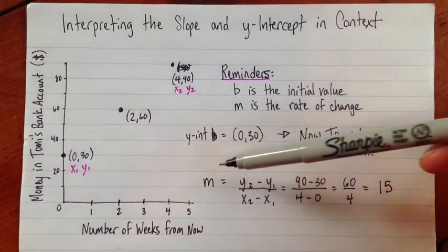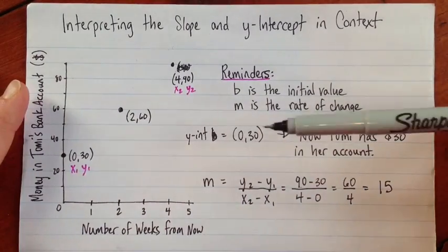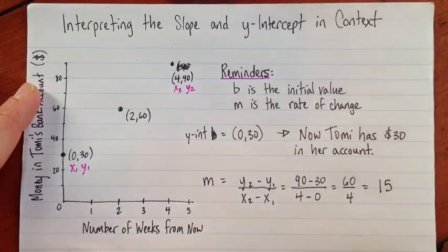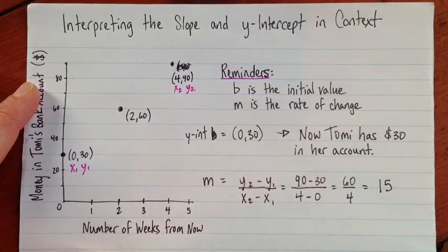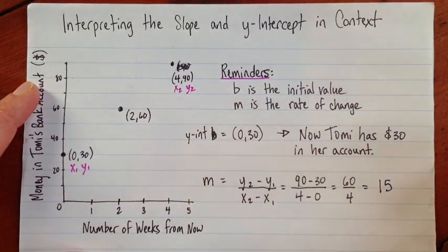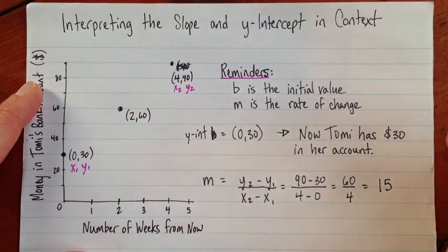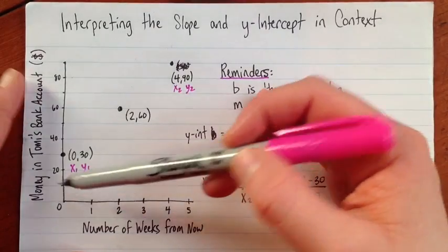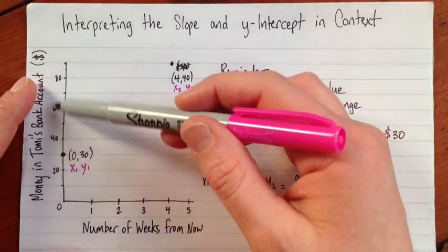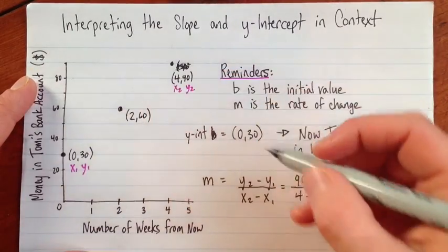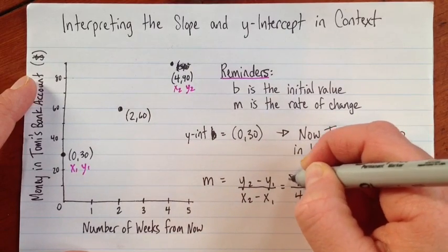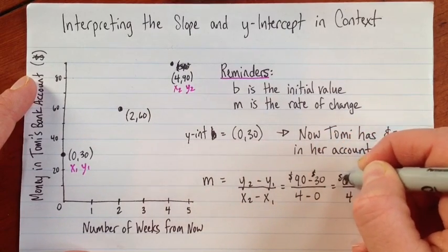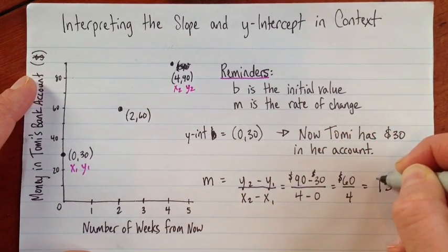Now what does this tell us? So any time we're using this slope and trying to learn something from it, hopefully that's all the time, or any time we have a context here, let's go back and put those units in. So, the y value. What's the y value of the units on that? Those are dollars. So we'll put dollars here. So it's 15 dollars.